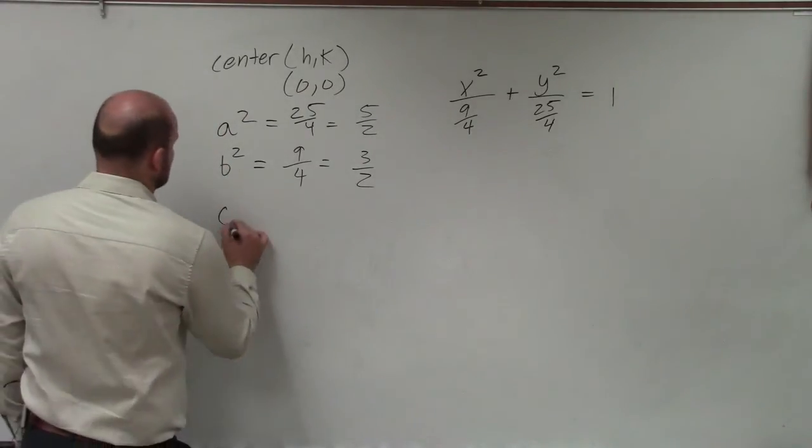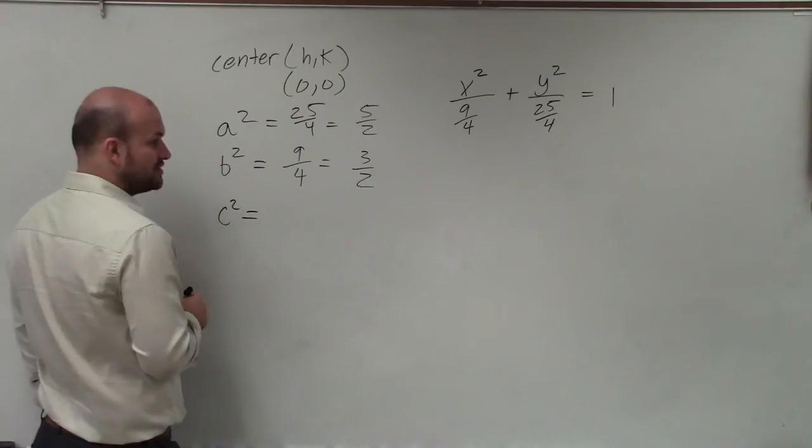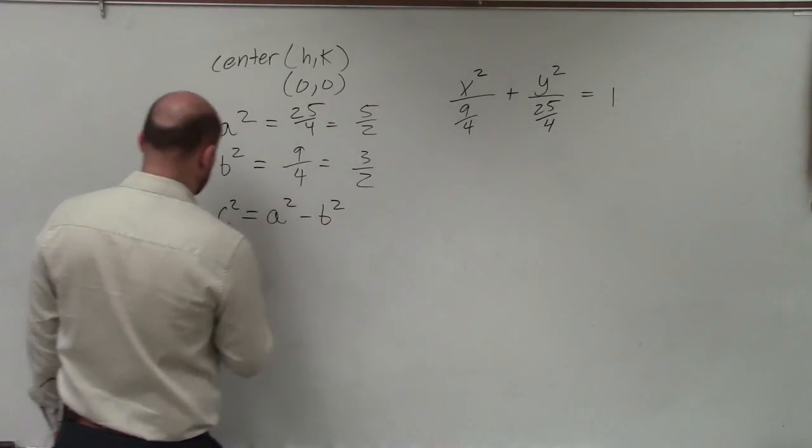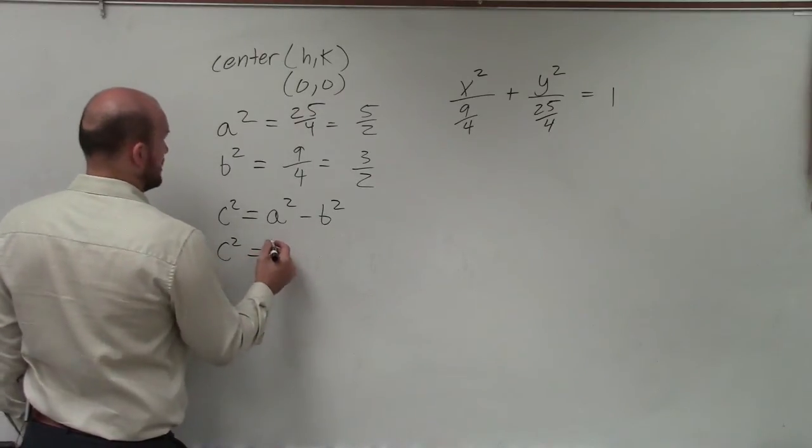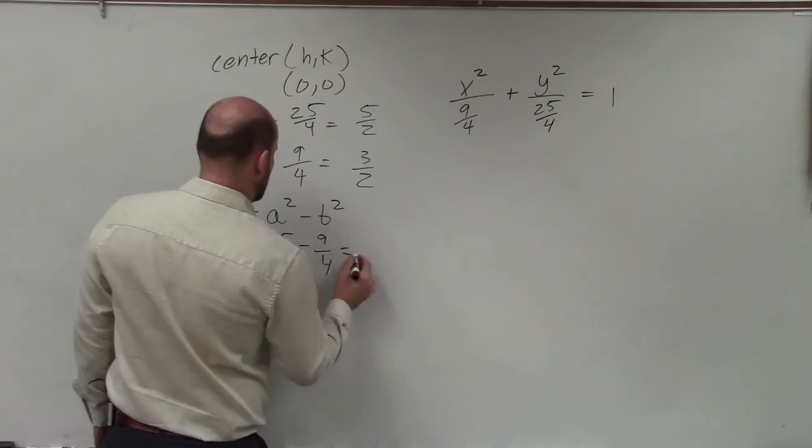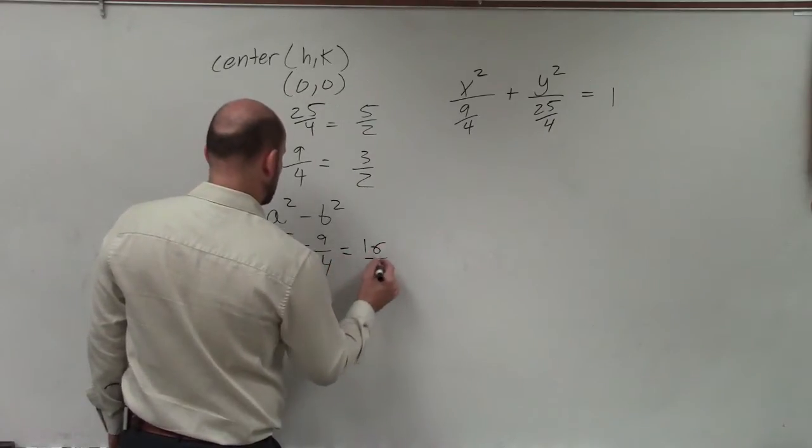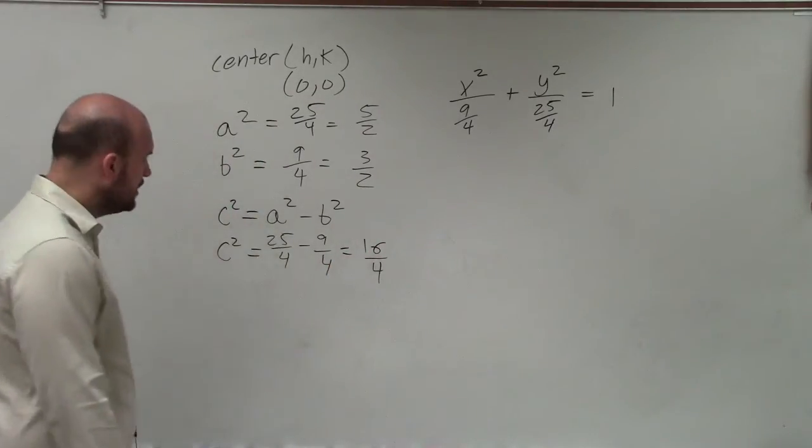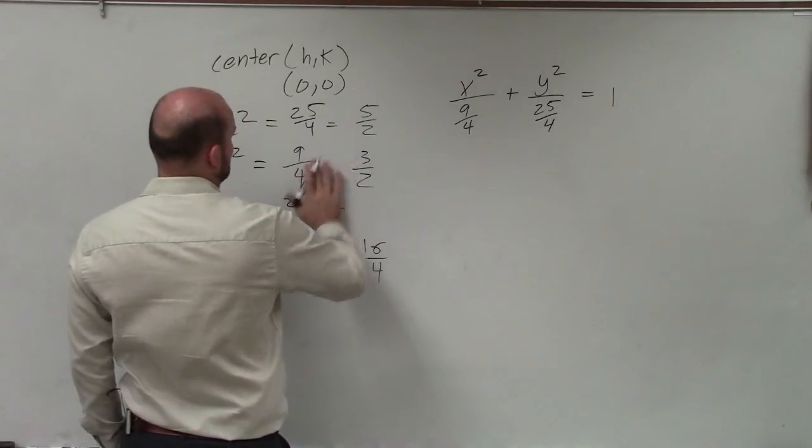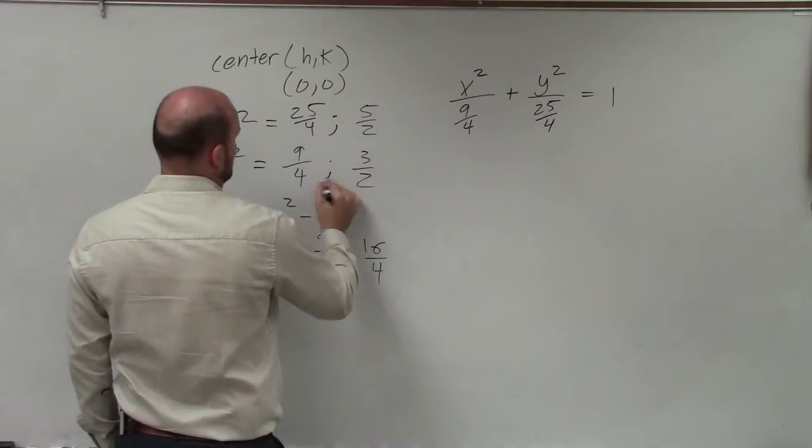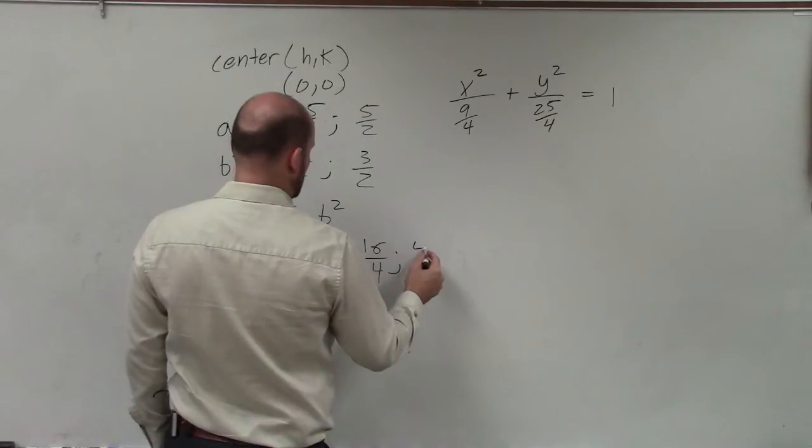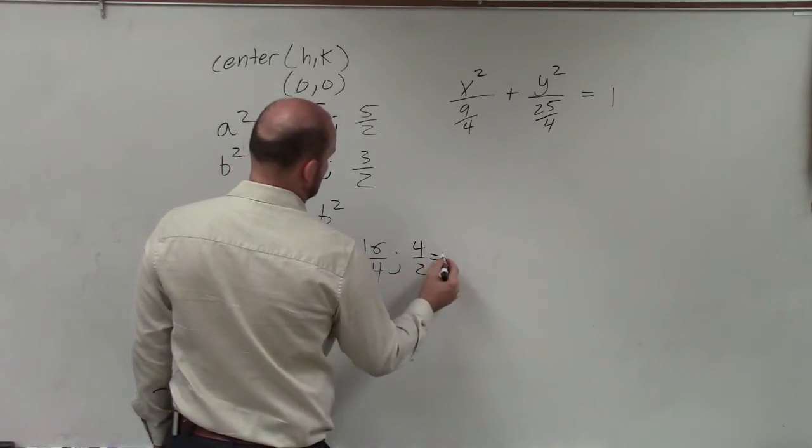The last thing we want to do is figure out what c² is. Now, remember, there's a relationship for c². And the relationship is a² minus b². So c² equals 25 over 4 minus 9 over 4, which equals 16 over 4. So therefore, c is going to equal 4 halves, which is equal to 2.